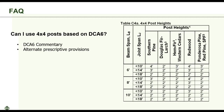Can I use 4x4 posts in the DCA-6? The commentary of the DCA-6 now gives alternative provisions, such as using 4x4 post heights. The table is read the same way as the table in the main document.